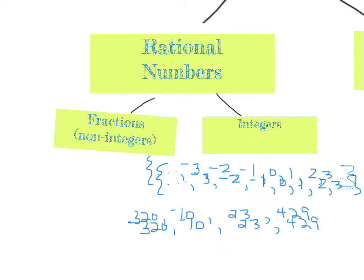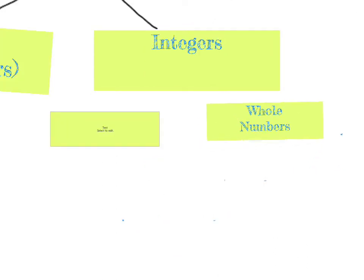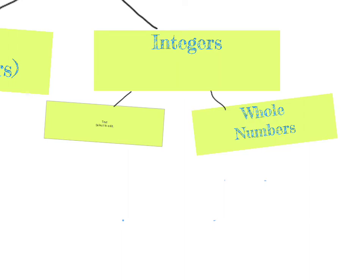The next zoom in would be what's inside the integers. Inside the integers, we have negative integers plus whole numbers. Now whole numbers — I can remember them by the fact that there is an O in the word 'whole,' which gives me a memory device to remember that whole numbers include zero and the positive integers.